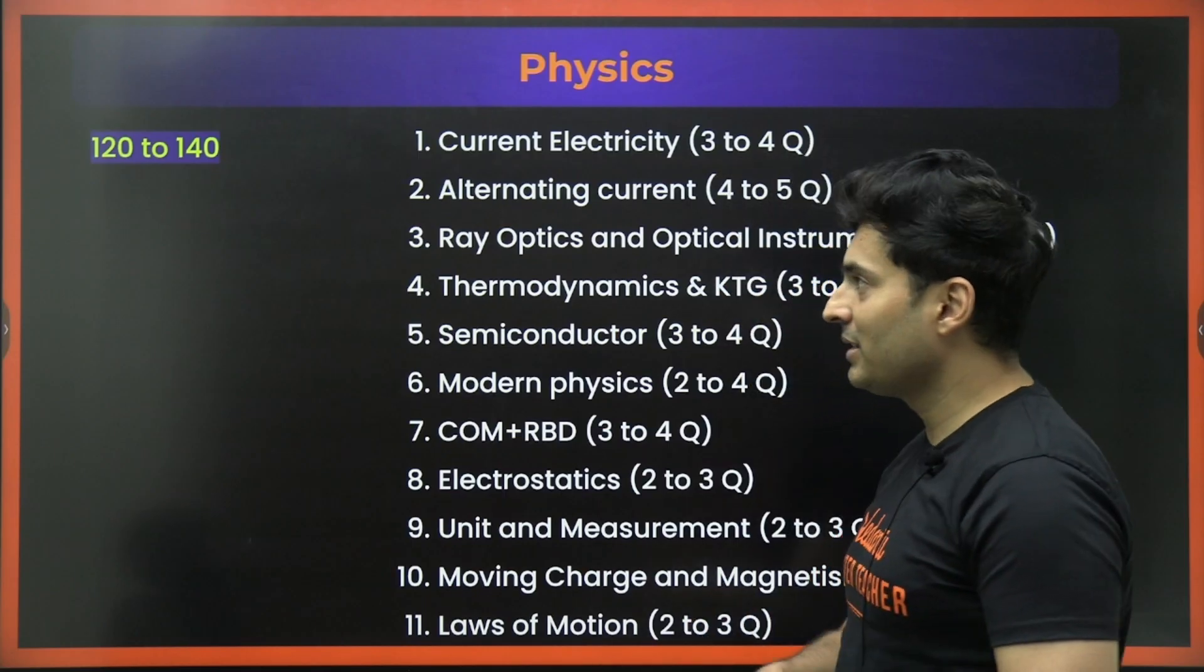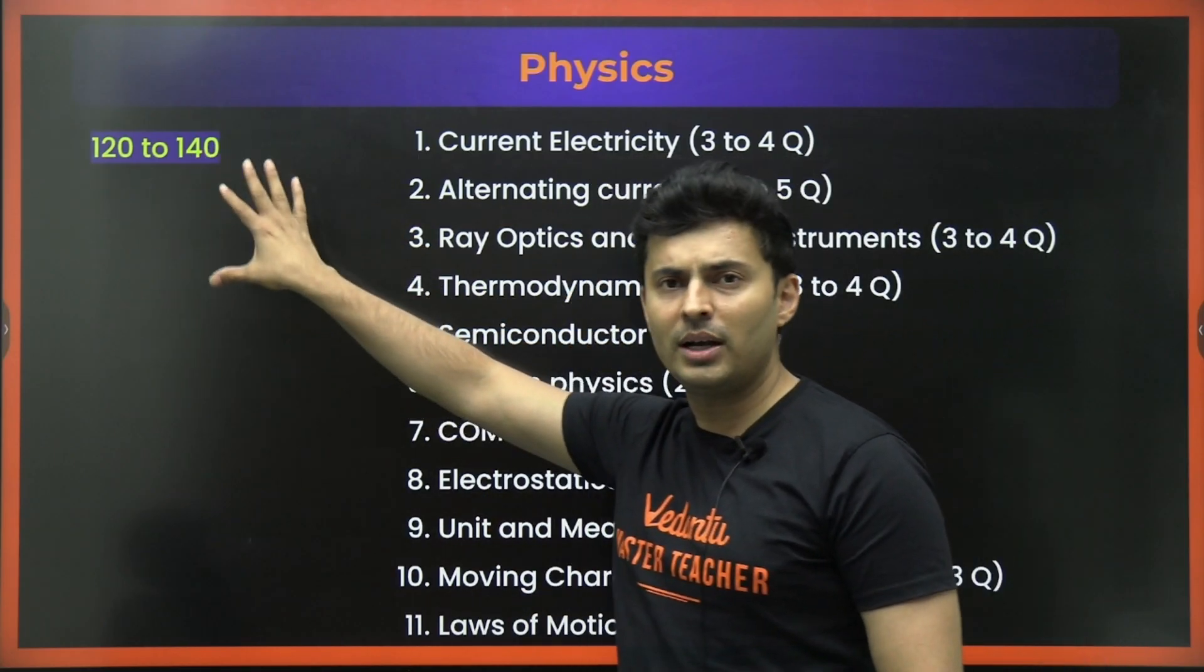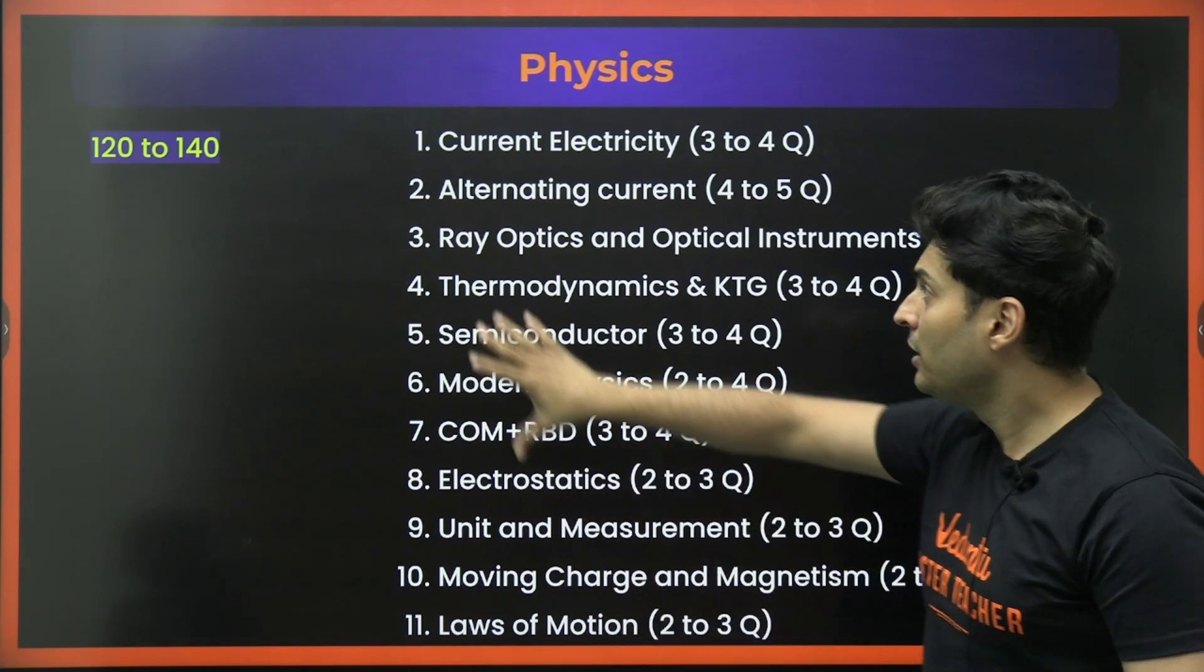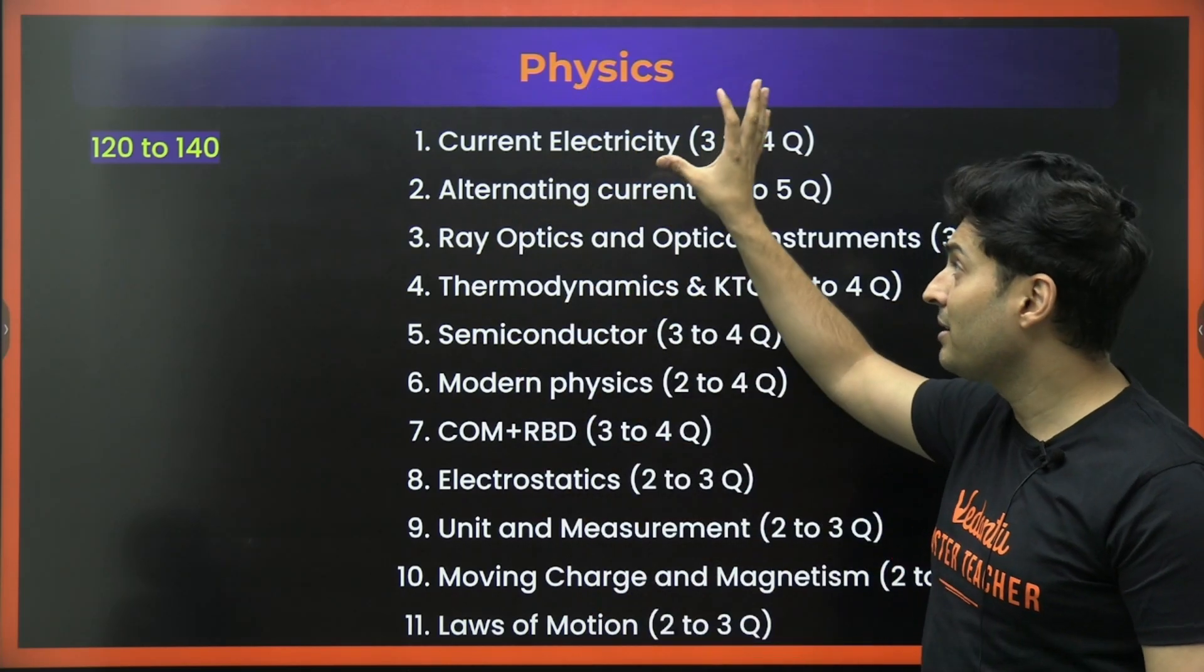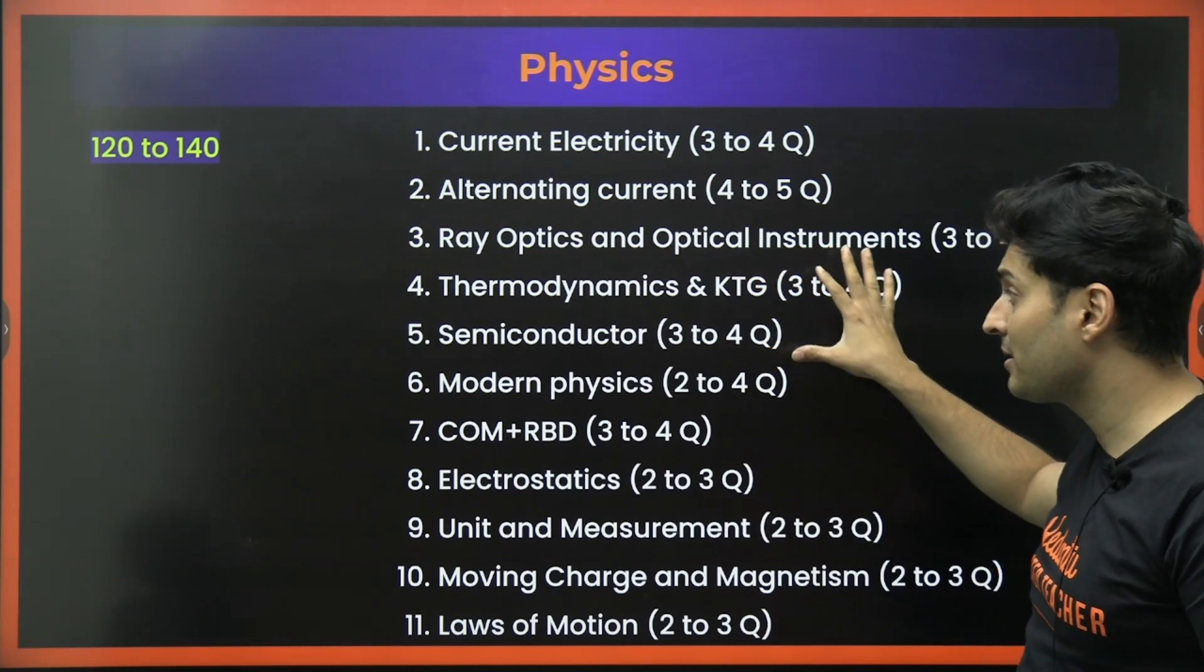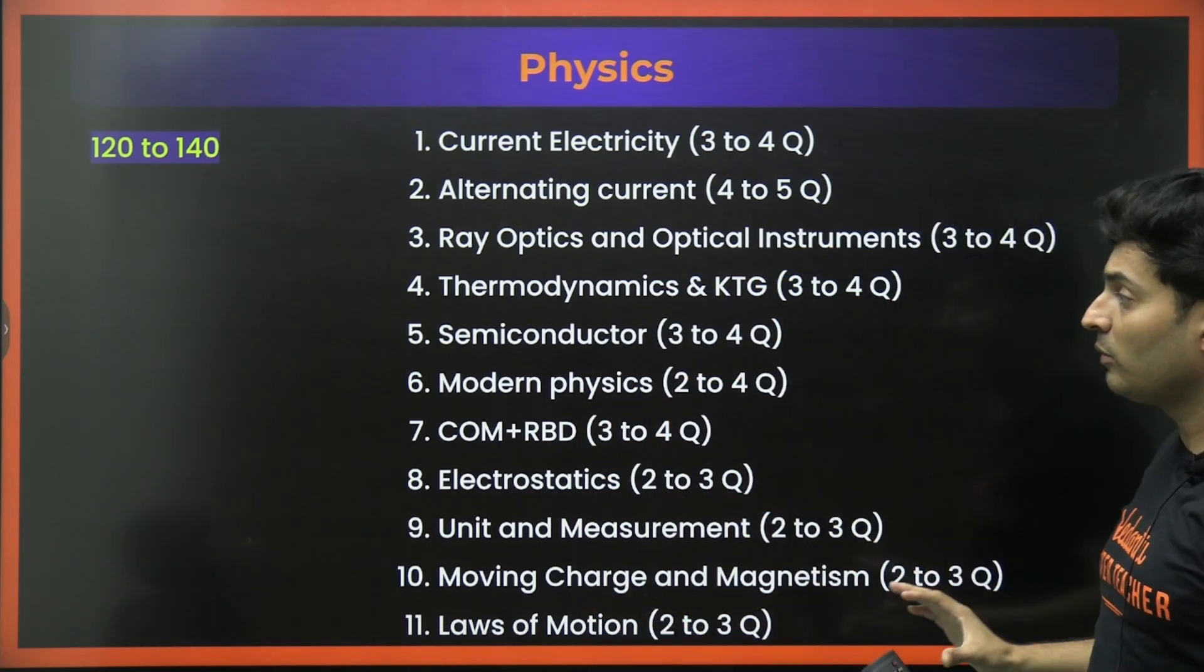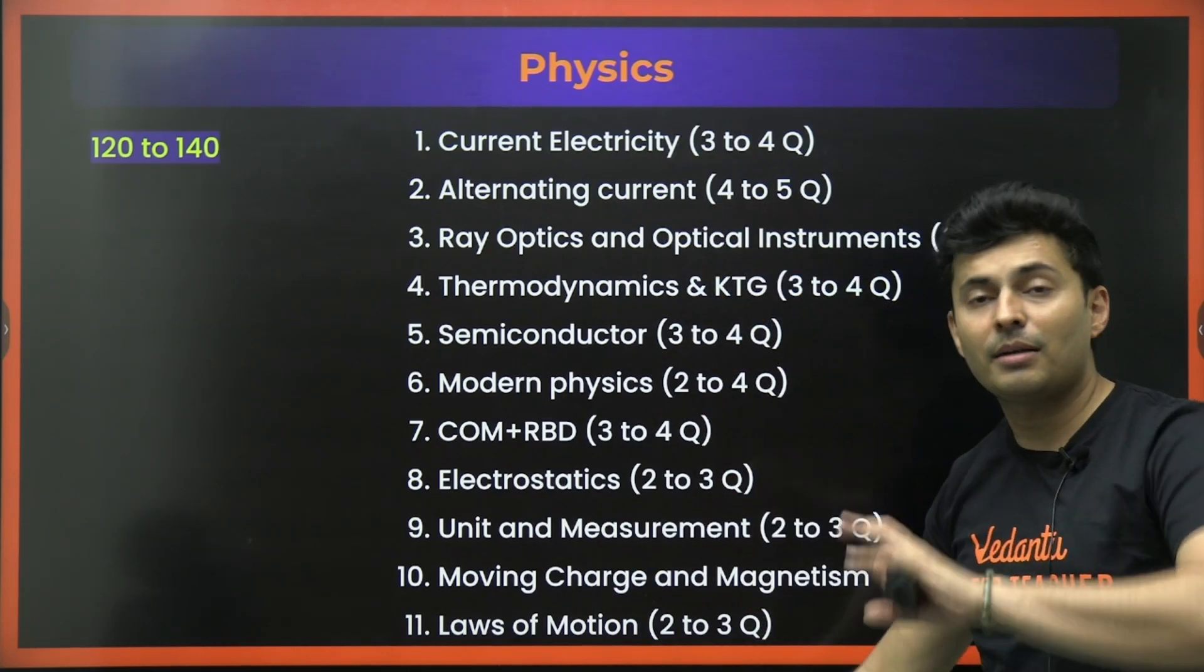Starting off with physics, if you target anywhere between 120 to 140 marks, these are the chapters that you should target. These are the very important chapters like current electricity, AC, ray optics, etc. And then even these chapters carry a decent amount of weightage. All these chapters are must do.